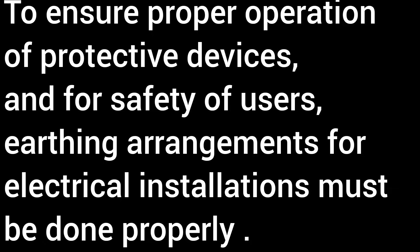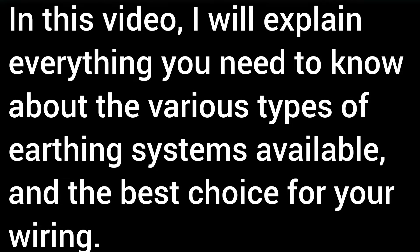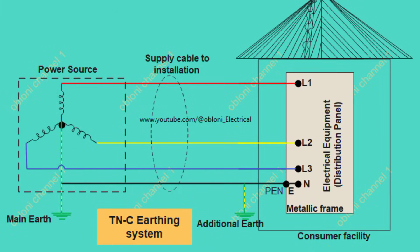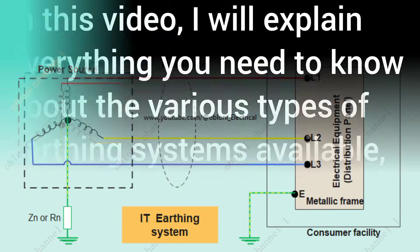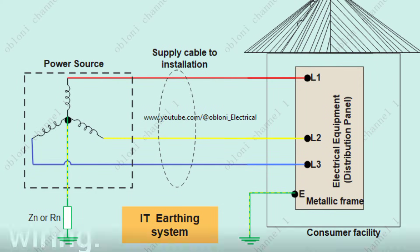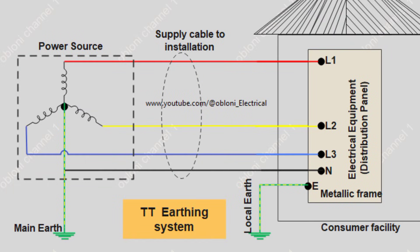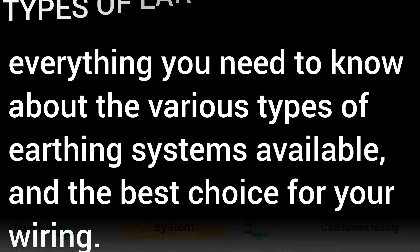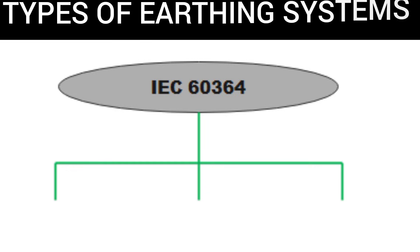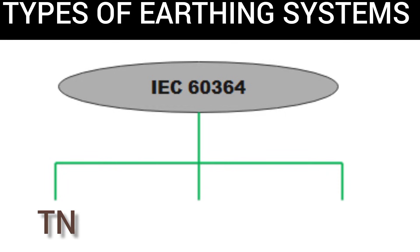In this video, I will explain everything you need to know about the various types of earthing systems available and the best choice for your wiring. The IEC 60364 distinguishes three major types of earthing systems using the two-letter codes TN, TT, and IT.